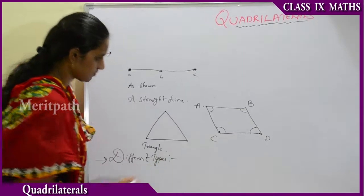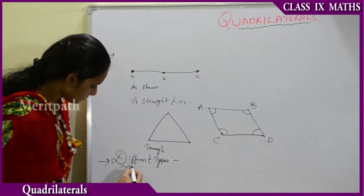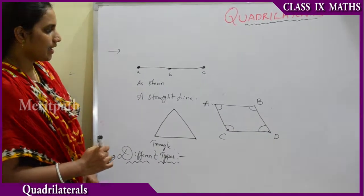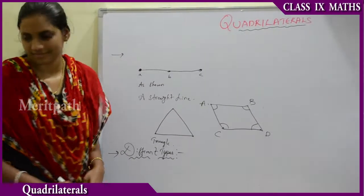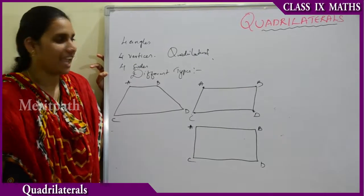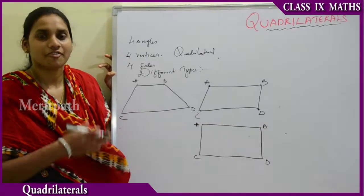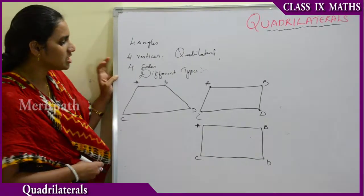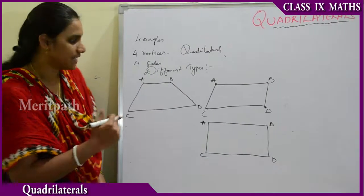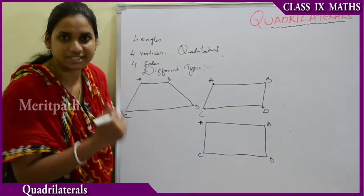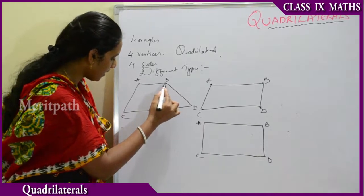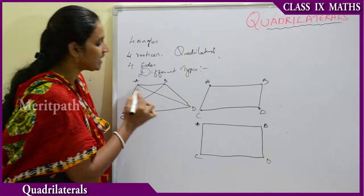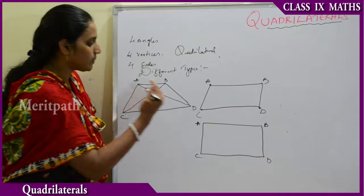A quadrilateral consists of four vertices: A, B, C, D. The sides of the quadrilateral are AB, BC, BD, and CD. The quadrilateral also has four angles: angle A, angle B, angle C, and angle D. These four angles are all related to that particular quadrilateral.